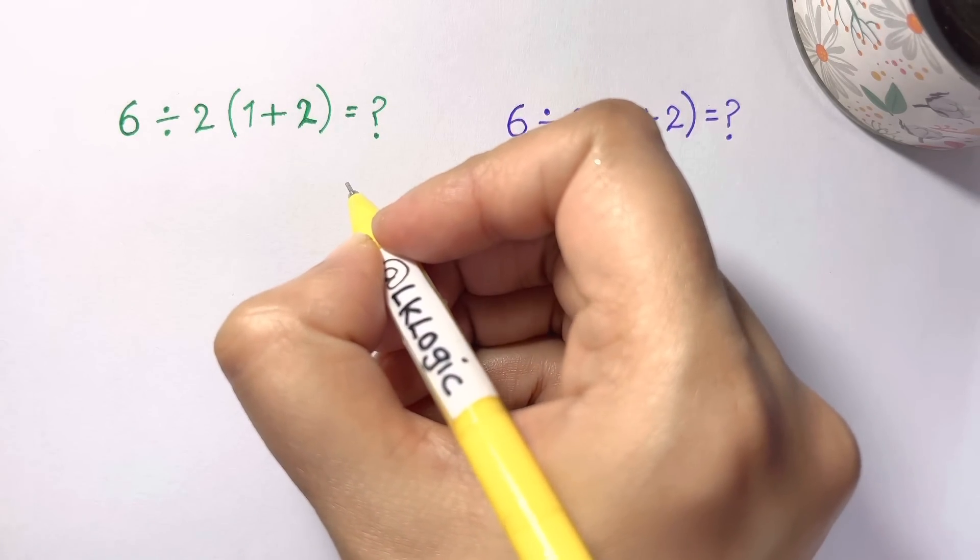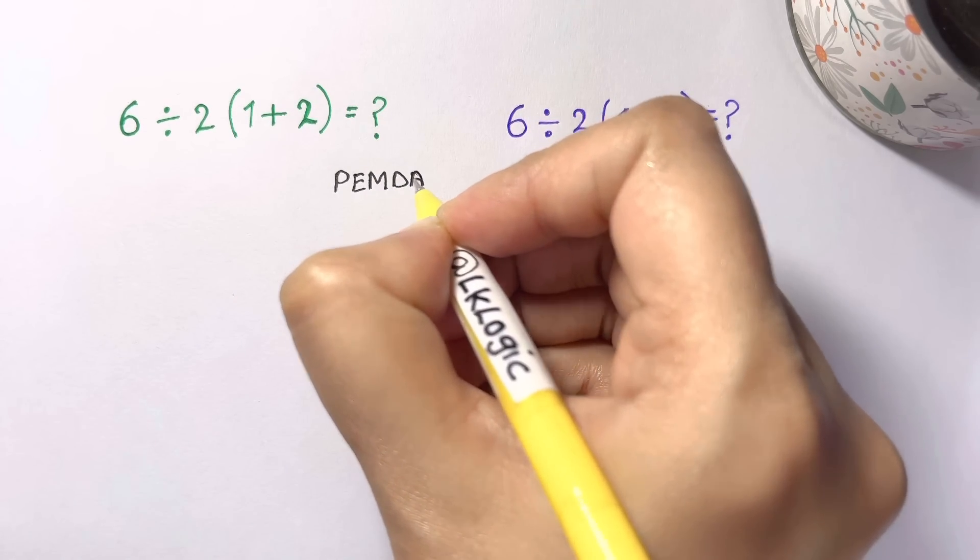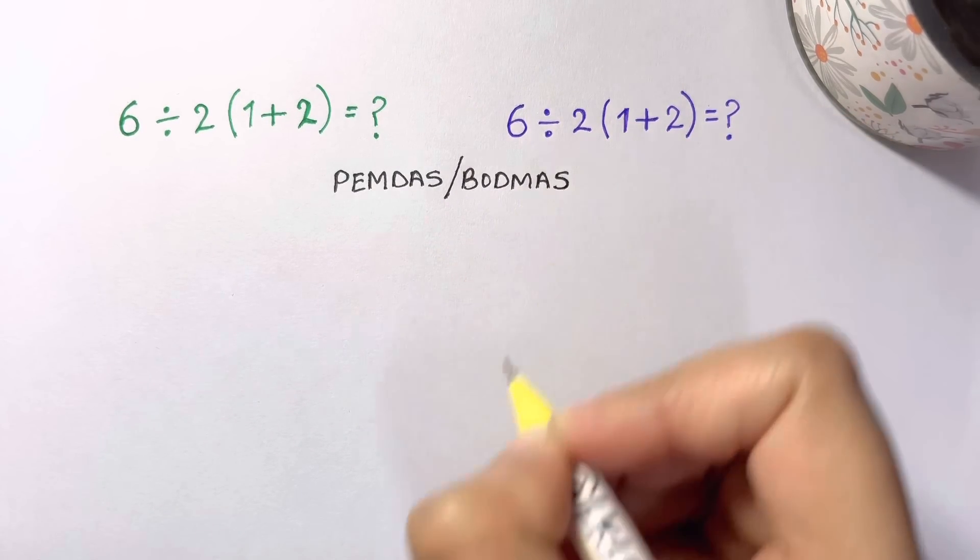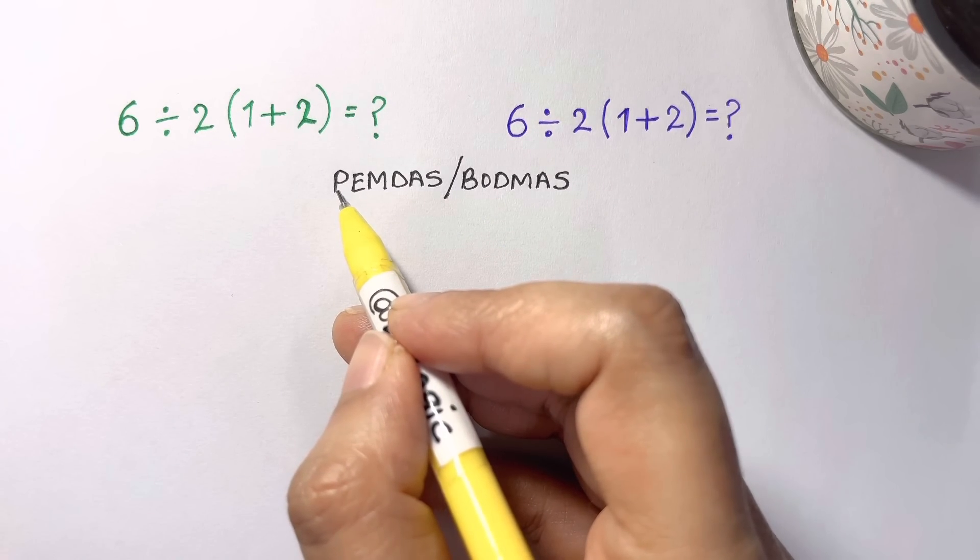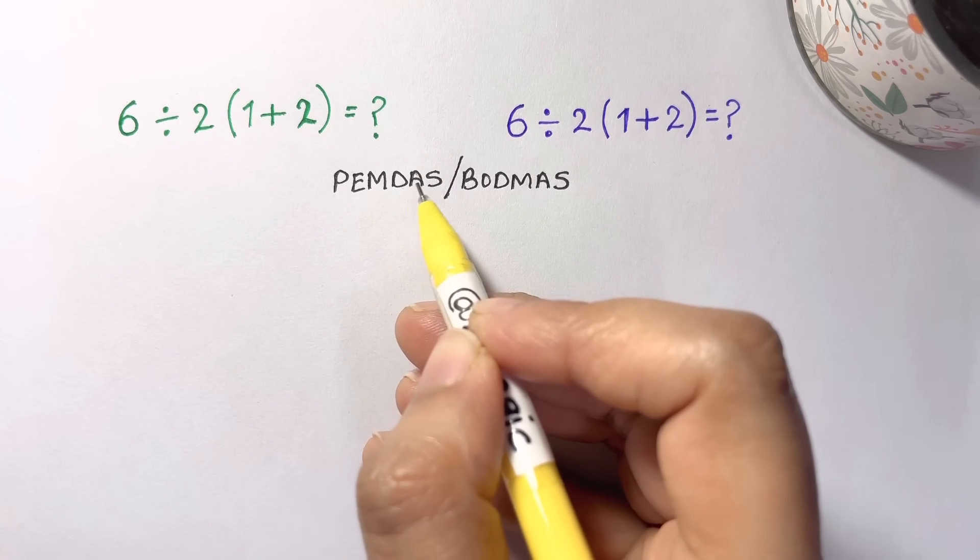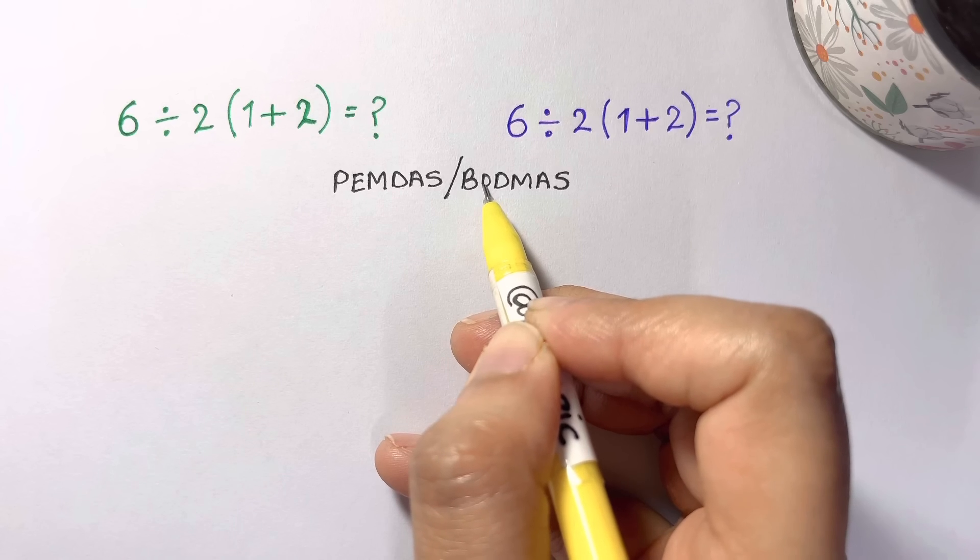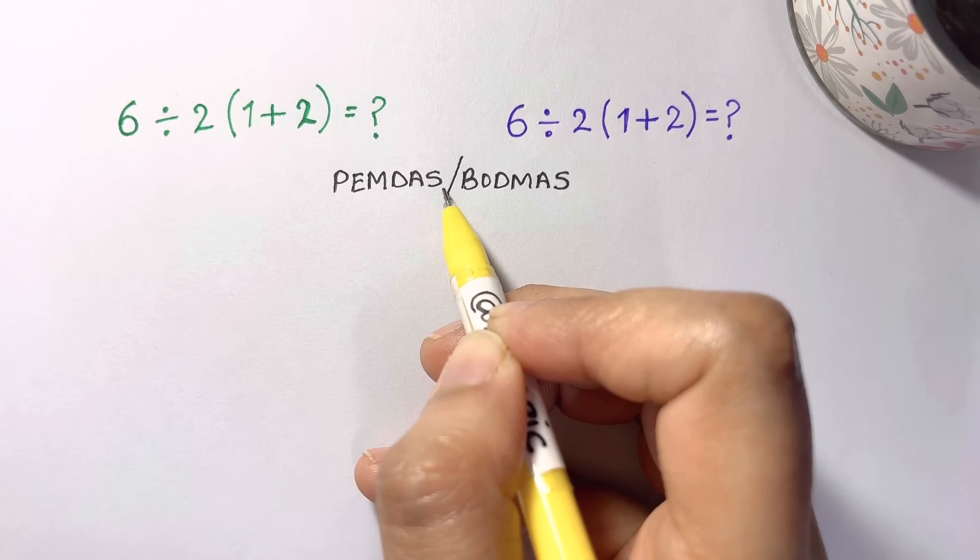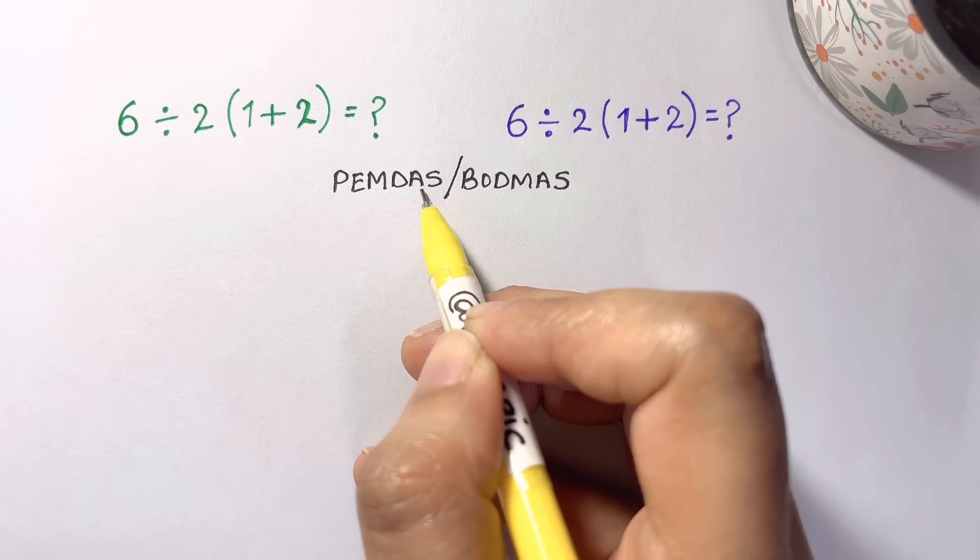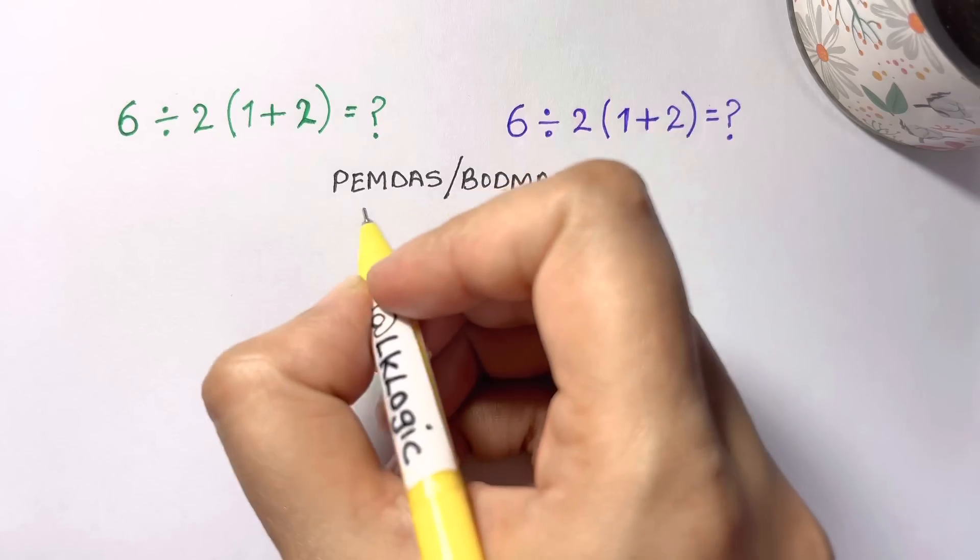PEMDAS or BODMAS refers to: evaluate parentheses or brackets first, then exponents or orders, then multiplications and divisions, and finally additions and subtractions. So parentheses and brackets are the same, exponents or orders, multiplications, divisions, and additions or subtractions. If there are two operations of the same precedence like multiplication and division or addition and subtraction, then you have to evaluate them from left to right.